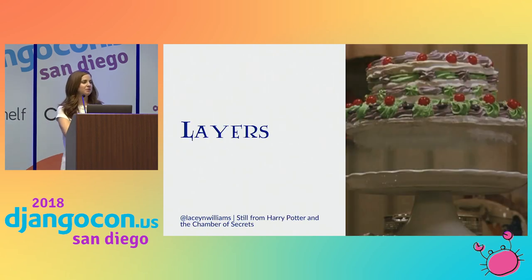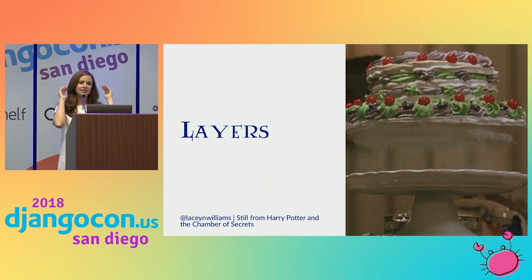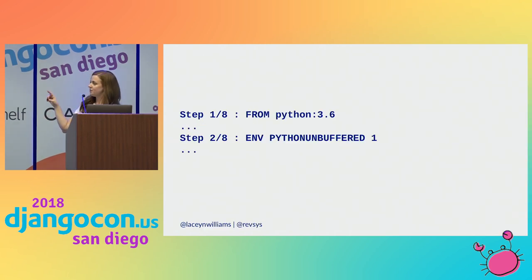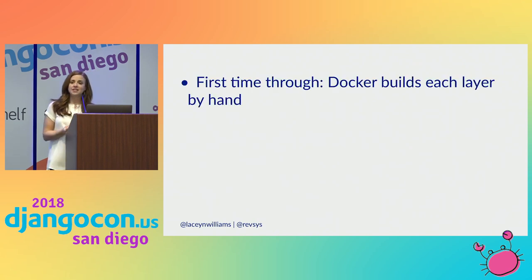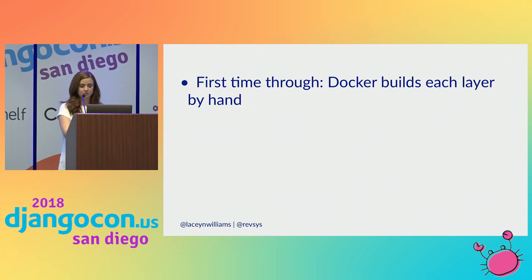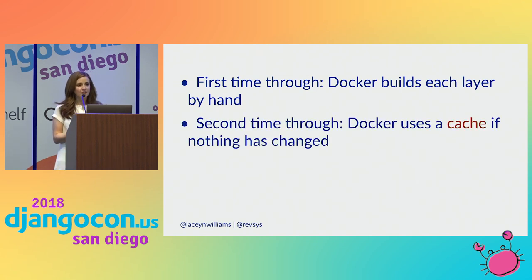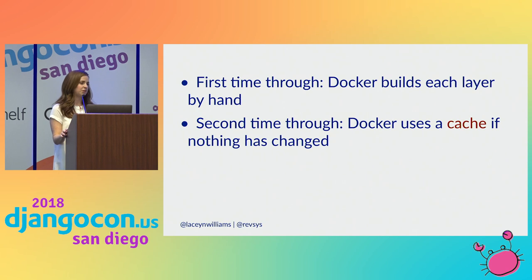Docker builds your image with particular steps — Docker is layered, and that's a really important concept to understand. Every line in your Dockerfile is its own layer in your image. You can see this whenever Docker is building: it goes through step one, step two, one at a time. So the very first time you build your image, Docker will build everything by hand, making all of those layers from scratch. The second time through, if you haven't changed anything, Docker will use a cache so it doesn't have to do all that work over again.